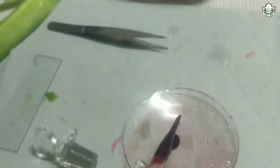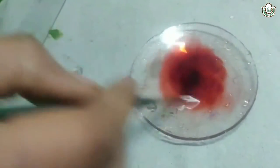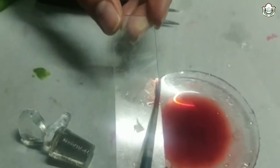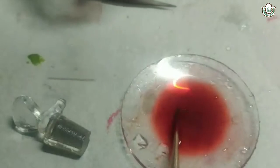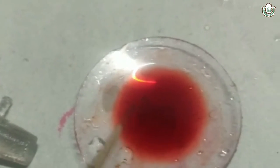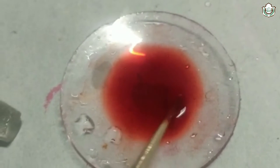Now gently take a drop of saffronine and mix with water like this. Now gently take the peel and place it for 2-3 minutes in saffronine stain so that it is stained.